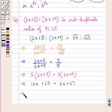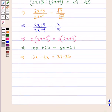Now, we need to find the value of x. So for this, we will transpose 6x to the left-hand side and 25 to the right-hand side. Thus, we get 10x - 6x = 27 - 25. That is, we have 4x = 2.